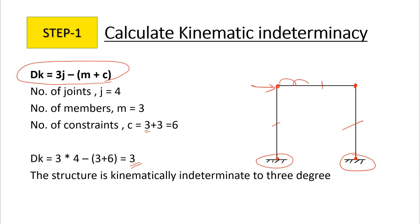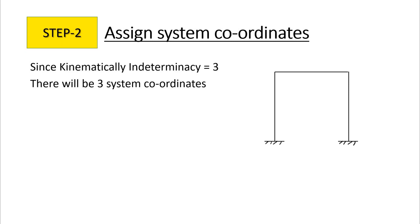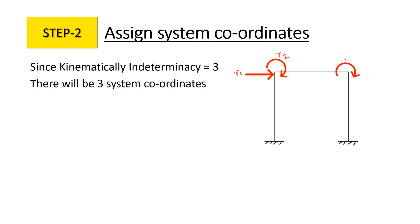In our question there is one point load and a UDL. Even though the frame has columns of the same length and is symmetric, the loading is not symmetric, therefore this is a sway frame. For a sway frame, we must consider all kinematic indeterminacies — all three of them. We assign system coordinates R1, R2, and R3, giving us three system coordinates.